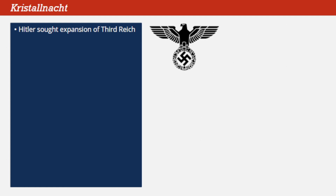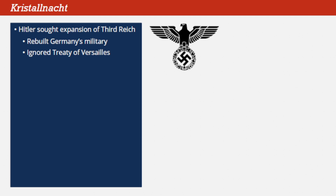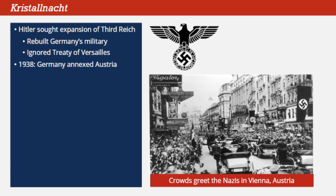Hitler sought the aggressive expansion of his Nazi empire, the Third Reich, in the late 1930s. He rebuilt Germany's military while boldly ignoring the provisions of the Treaty of Versailles, gambling that nations like France and Great Britain, in their desire to avoid another war, would do little but object. In this, Hitler was correct. In 1938, Germany annexed its neighbor, Austria, expanding the size of the Third Reich. Later that year, Germany expanded even further by annexing the region of Czechoslovakia known as the Sudetenland. Hitler's dream of a re-armed, re-invigorated Germany capable of conquering Europe was close to becoming a reality.